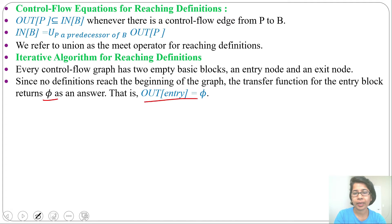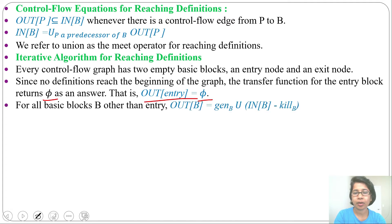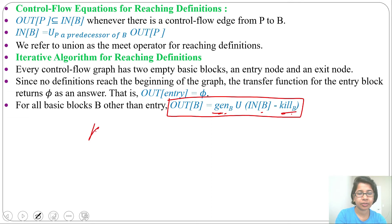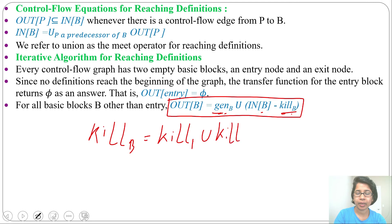We can say out of entry equals phi. For all basic blocks other than entry, out of B equals gen of B union in of B minus kill of B. So out of block will be gen of block union in of block minus kill of block. Since gen has higher precedence over kill, we should first evaluate kill, then evaluate gen. The formula for kill of B: kill of B equals kill of first statement union kill of second statement up to kill of nth statement, if one block contains n statements.